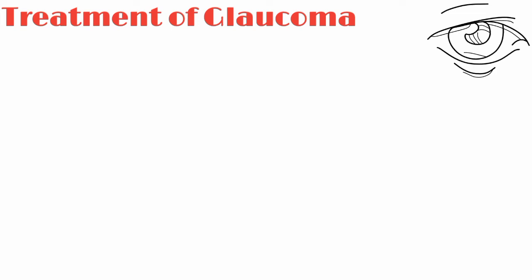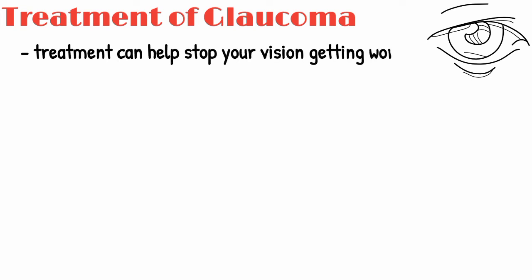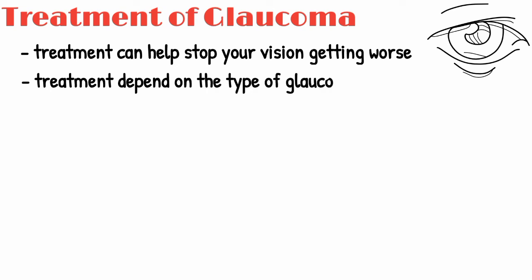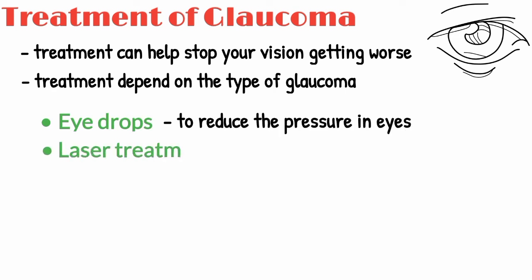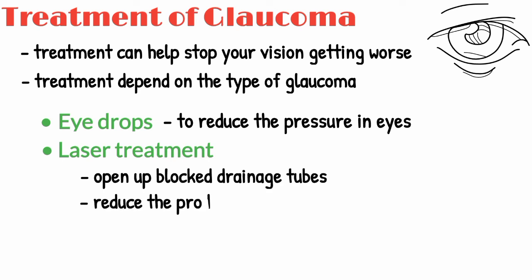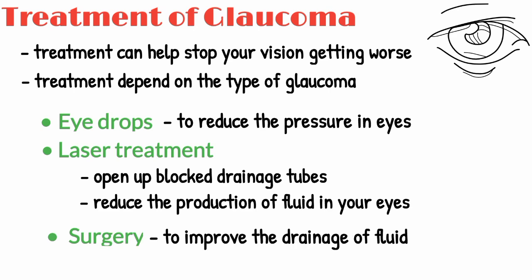Treatment of glaucoma. It's not possible to reverse any loss of vision that occurred before glaucoma was diagnosed, but treatment can help stop your vision getting worse. The treatment recommended will depend on the type of glaucoma you have, but the options are: eye drops to reduce the pressure in your eyes, laser treatment to open up the blocked drainage tubes or reduce the production of fluid in your eyes, and surgery to improve the drainage of fluid.